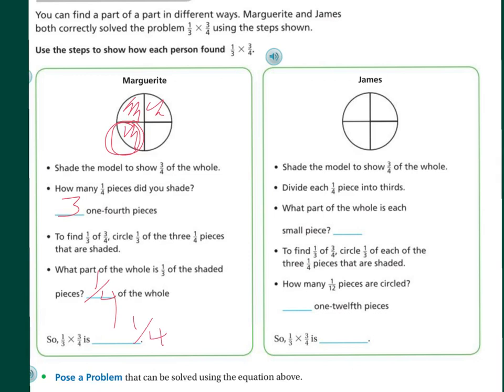Now let's see how James did it. Shade the model to show three-quarters of the whole. We're going to do kind of the same thing. Divide each one-fourth into thirds. Now I'm going to divide those into thirds. So, each of these is going to be divided into thirds.